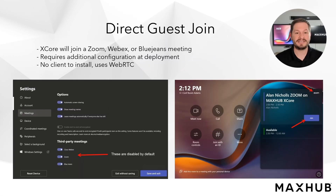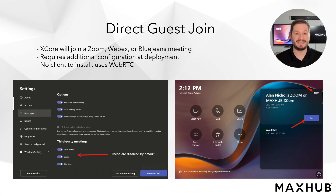The XCore also offers the Direct Guest Join feature, allowing it to participate in meetings hosted on a third-party platform. Currently, the XCore extends support for Zoom, WebEx, and BlueJeans. To utilize this feature, you can forward the meeting invite you receive to your conference room's mailbox, and the room account will handle the meeting processing and give you a Join button for the third-party meeting.